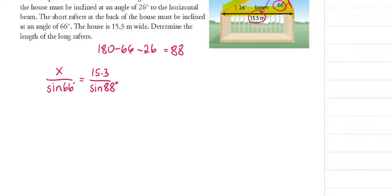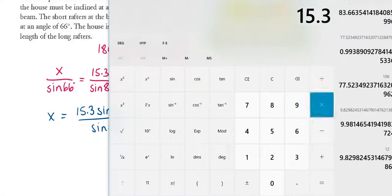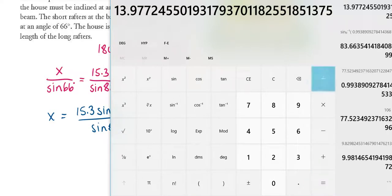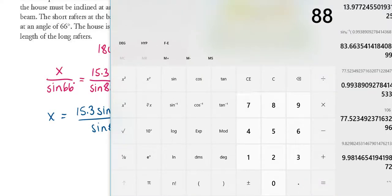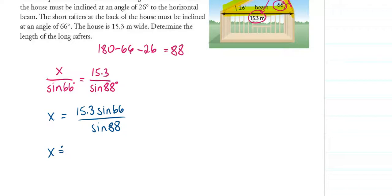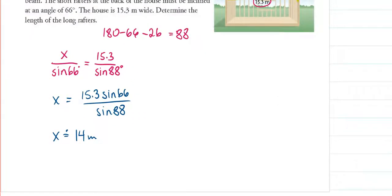X is my only unknown, so I multiply both sides by sine 66: X equals 15.3 times sine 66 divided by sine 88. Using my calculator — 15.3 times sine 66, divided by sine 88 — gives approximately 13.98, which I round to 14 meters. So the length of the long rafters is approximately 14 meters. And that's it for the sine law examples — this ends the video.